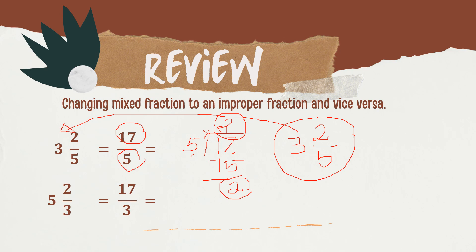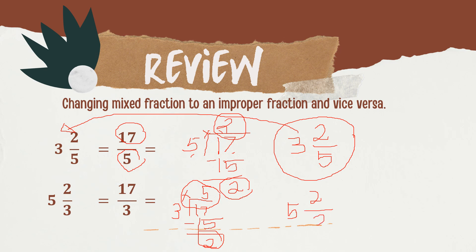This time, let us change 17 over 3 to a Mixed Fraction. Same procedure: 17 divided by 3. That is 5. 5 times 3 is 15. 17 minus 15 is 2. So 5 is our whole number, 2 is our numerator, and 3 will be our denominator. The answer is 5 and 2 thirds.